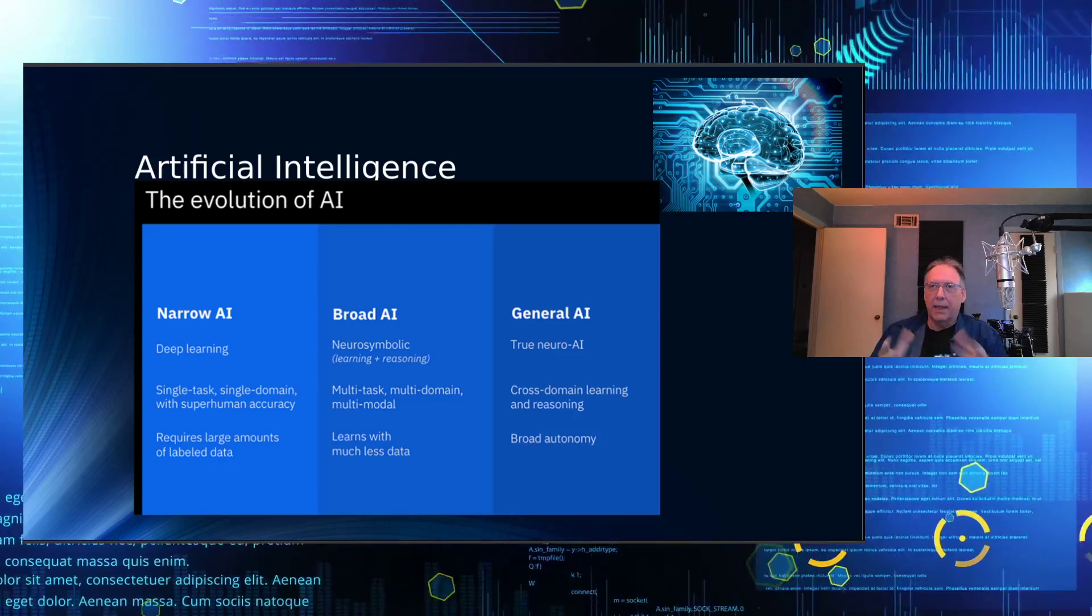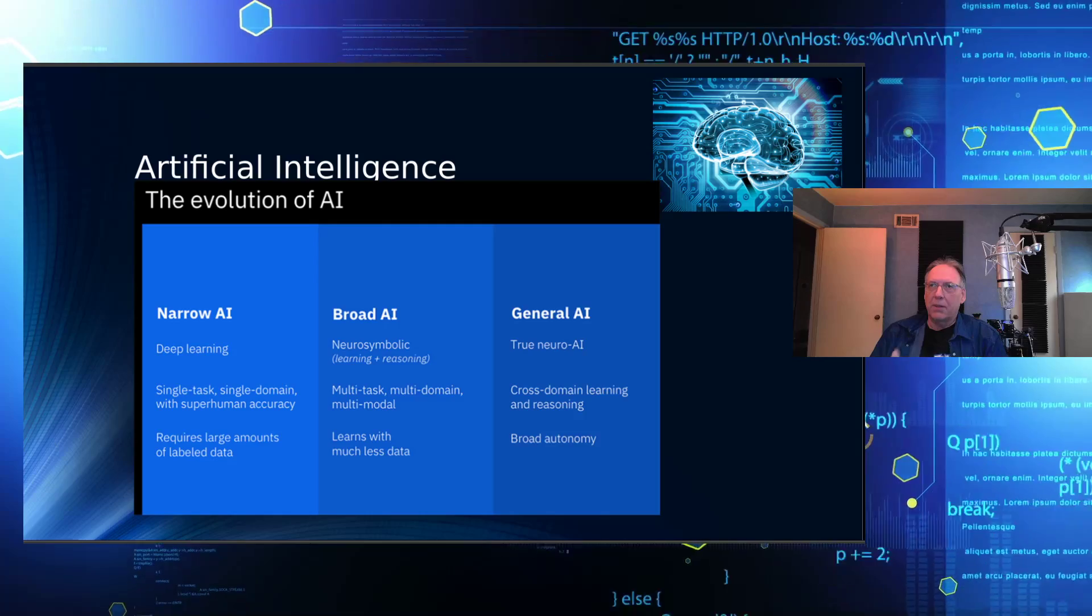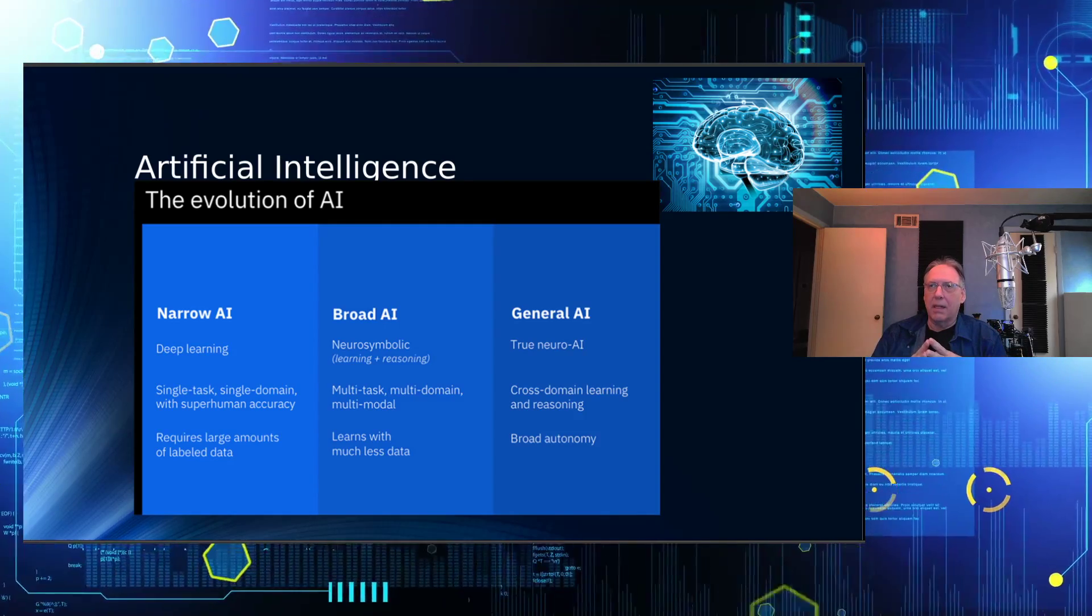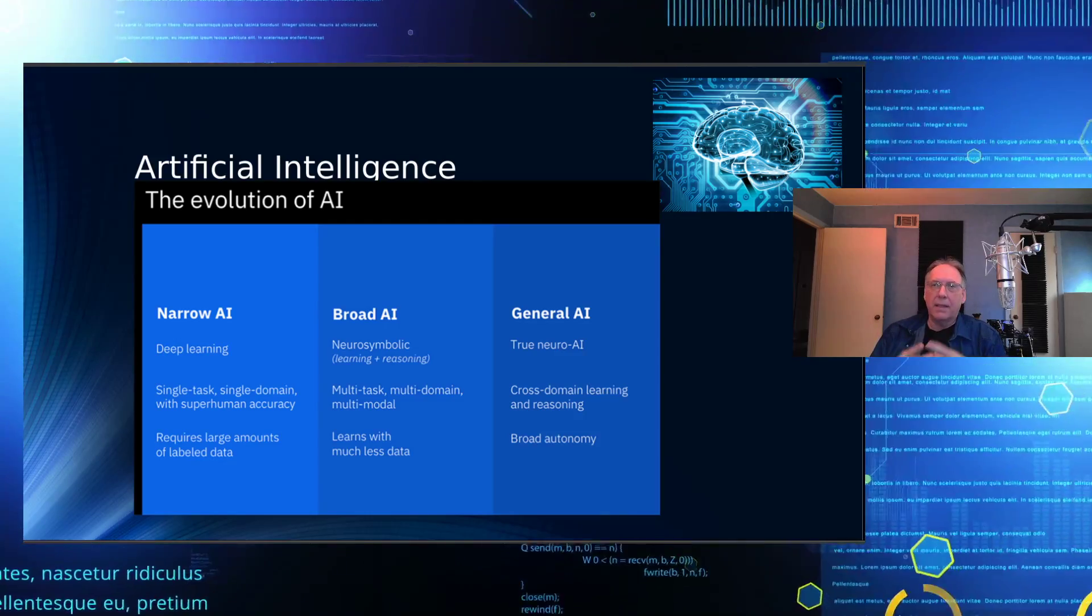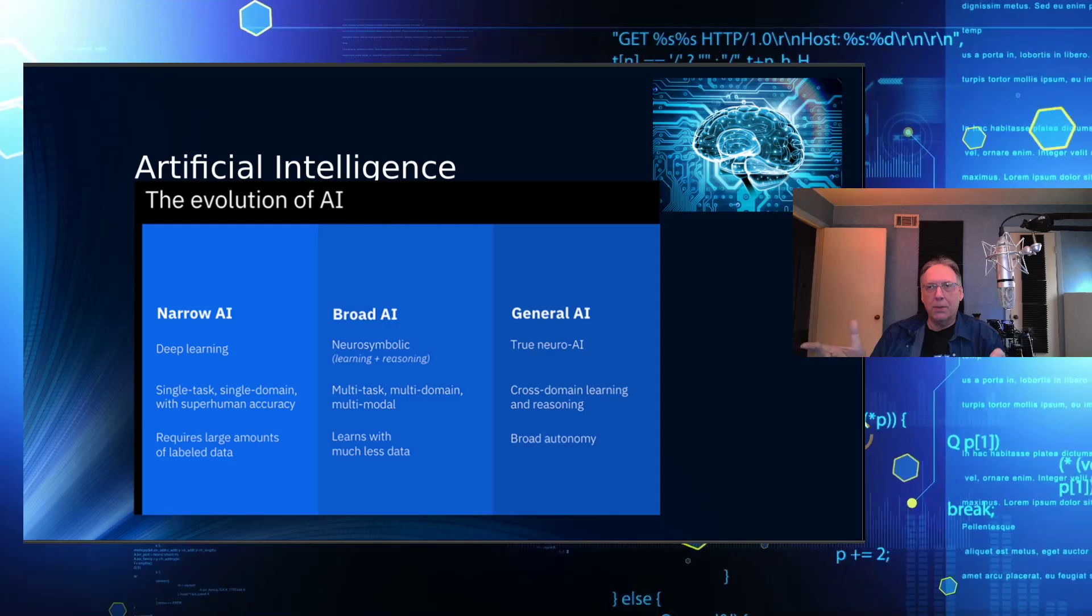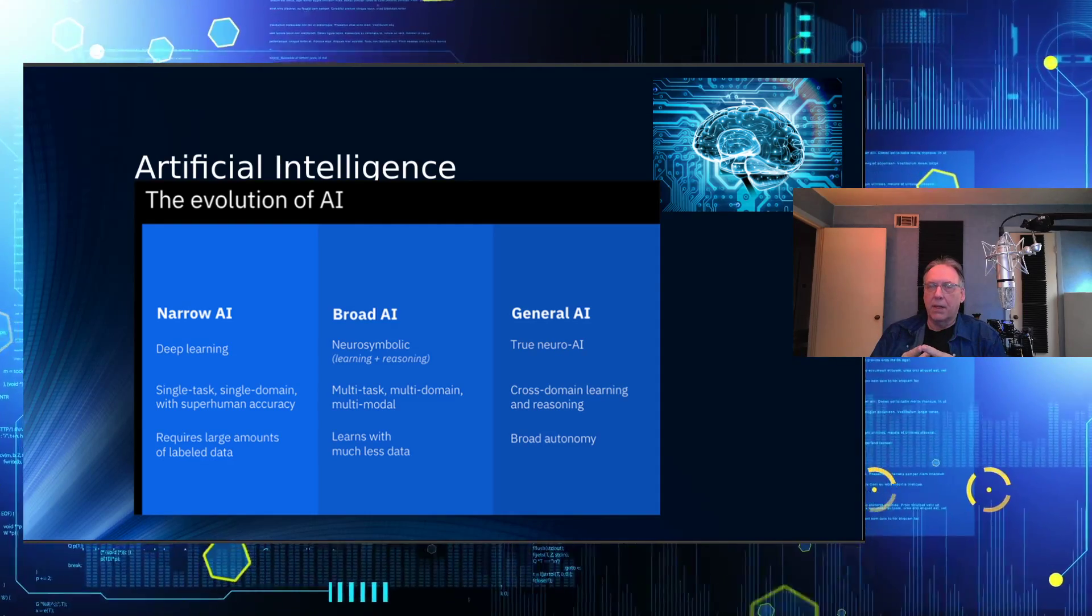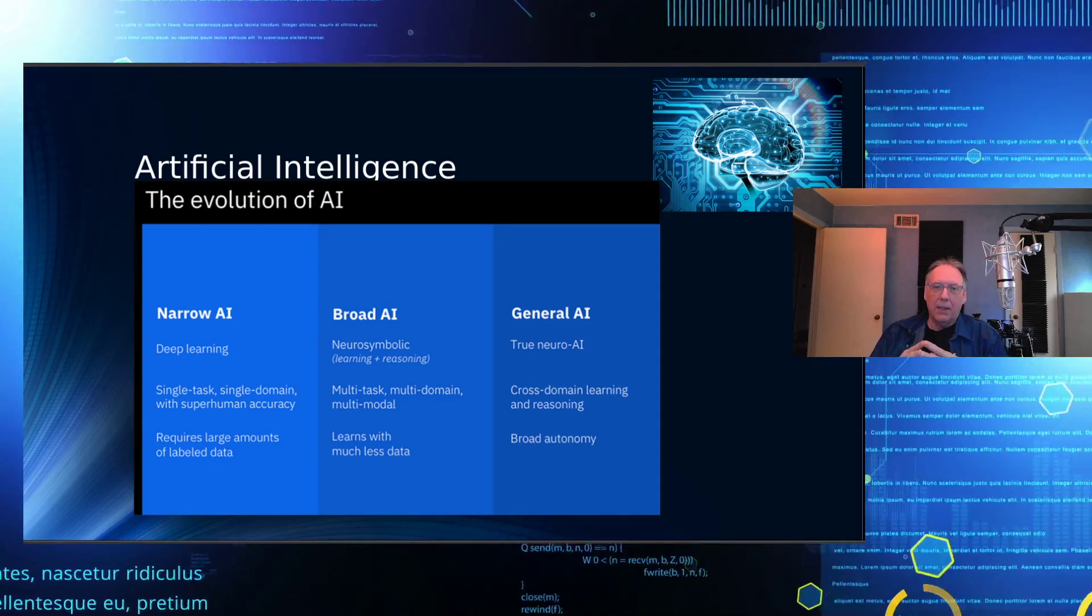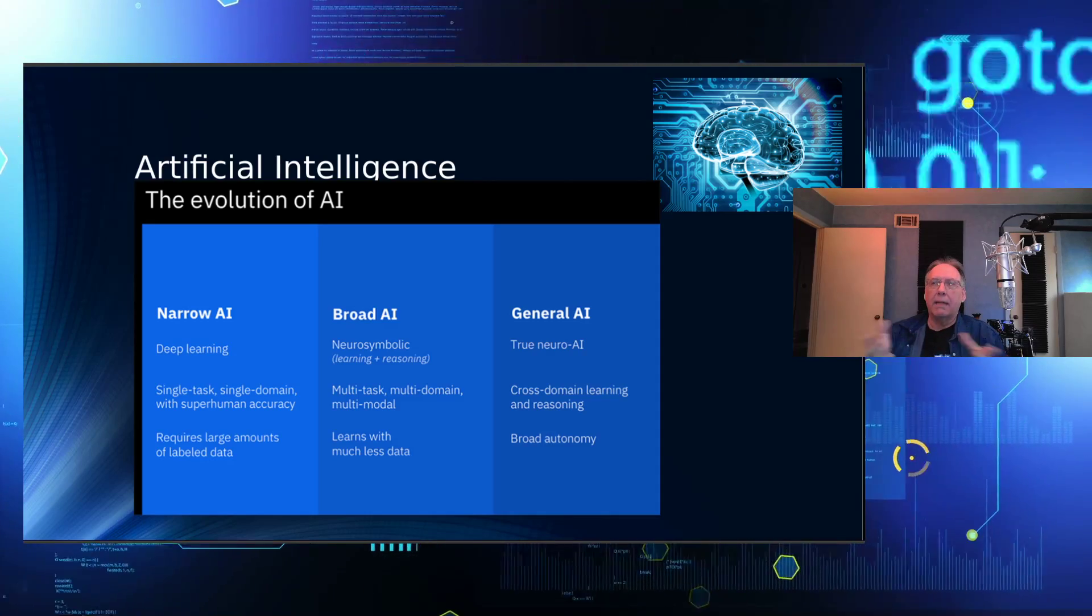General AI is like we humans learn. So there is some instruction given, there's trial and error, and there's some reasoning that's done behind it that allows the computer to learn a new task. And that will fit most domains, provided the computer has the instruction and the education in order to understand the types of problems it's trying to learn, and that gives it some broad autonomy.